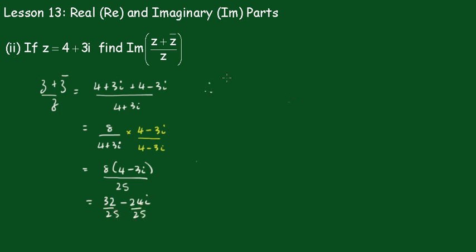Therefore, the imaginary part of Z plus Z conjugate over Z is equal to this part here, minus 24i over 25.